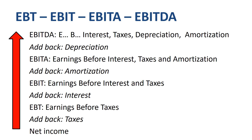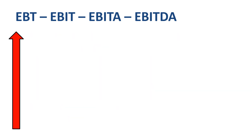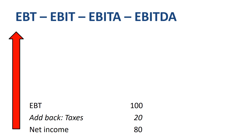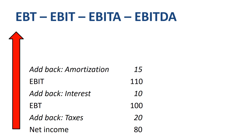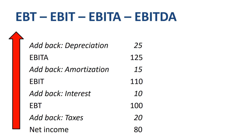Let's do that one more time, but now with some numbers for illustration. If you add back corporate income tax expense of 20 to net income of 80, you get to earnings before taxes of 100. If you add back interest expense of 10 to EBT of 100, you get to earnings before interest and taxes of 110. If you add back amortization expense of 15 to EBIT of 110, you get to earnings before interest, taxes, and amortization of 125. If you add back depreciation of 25 to EBIT-A of 125, you get to earnings before interest, taxes, depreciation, and amortization of 150.